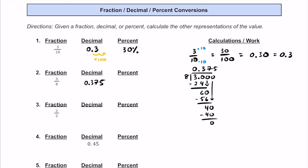And if you want to write that as a percent, let's multiply that by 100, or slide that decimal twice to the right. That'll be 37.5%.